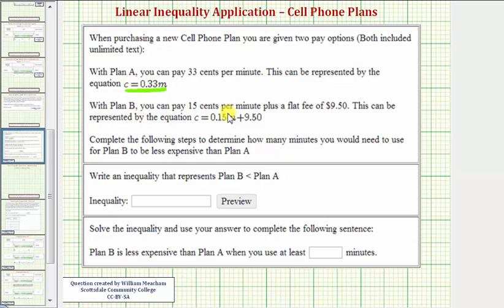With plan B, you pay 15 cents per minute plus a flat fee of $9.50. This can be represented by the equation C equals 0.15M plus 9.50, where again M is the number of minutes and C is the total cost.